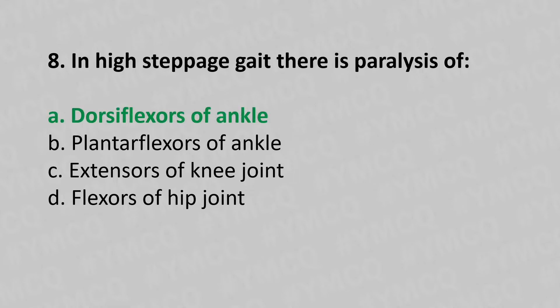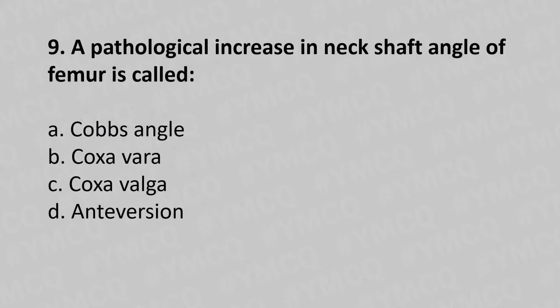Moving to our ninth question: a pathological increase of the neck-shaft angle of the femur is called — option A: coxa vara, option B: coxa valga, option C: coxa valga, option D: anteversion.